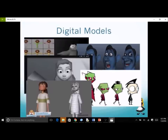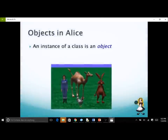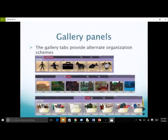Animation adds motion to a model. In Alice, a class puts together a digital representation of an entity, a plan for constructing it, and instructions for animating it, all in the same file. A more general definition: a class defines a type of object or model entity and the actions that can be performed by that object. The Alice gallery contains classes for creating and animating objects in an Alice virtual world.